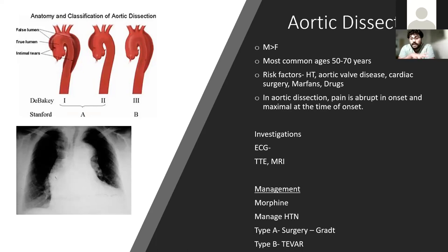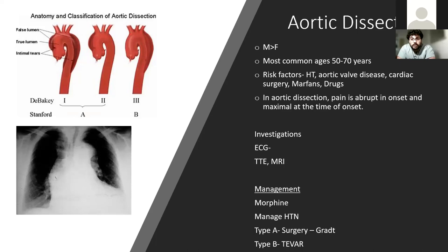Treatment depends on the type. Type A — involving the ascending aorta and causing aortic regurgitation as in this patient — predominantly needs surgical correction. Type B — descending aorta — is managed medically, with blood pressure control using beta blockers and GTN, targeting a systolic of around 100 to 120. This patient has flaccid paraparesis because the dissection has compromised the radicular arteries, particularly the artery of Adamkiewicz, causing ischaemia of the anterior spinal cord.